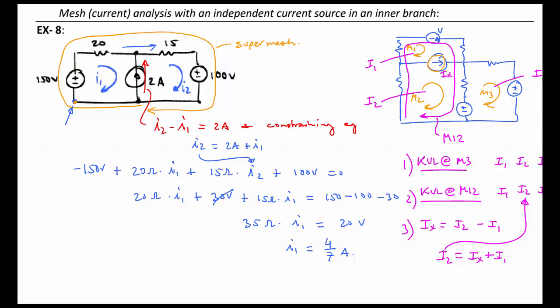That's the approach for dealing with a super mesh when you have a current source that is shared between two meshes. And this process would work the same if instead of being an independent current source, it was a dependent source. You'd use the same method.